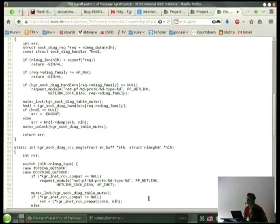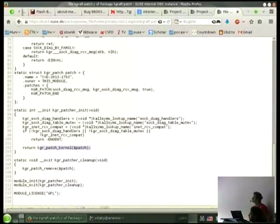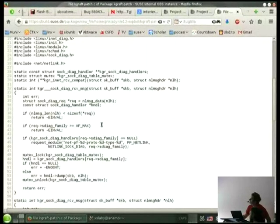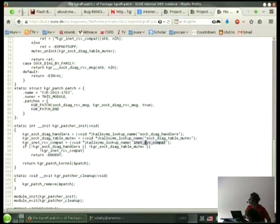Back? What do you mean? Are you checking on those? The kallsyms lookup name are there because from the module you cannot access these. That's the global array. So I have to find the address of the array which I'm using there. Because it's not exported to modules. And I use it here. The same for the mutex and this should be some function which is not exported too.